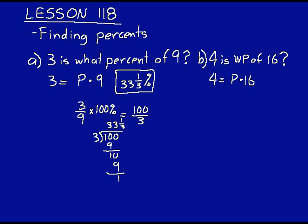Now we know what to do here. It's a missing value type of problem. So we just say 4 over 16. That's the same thing as 1 fourth. We multiply that answer times 100%.